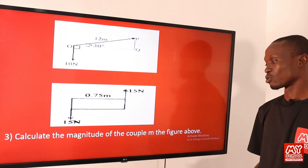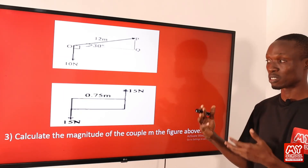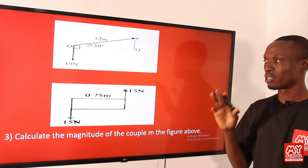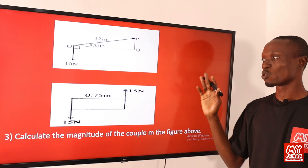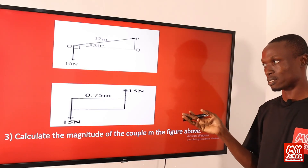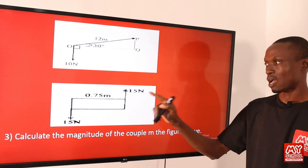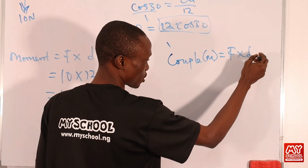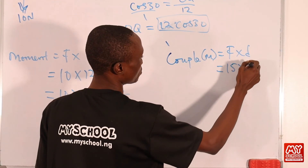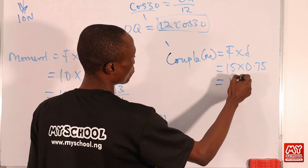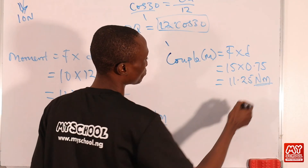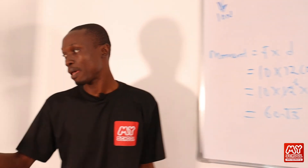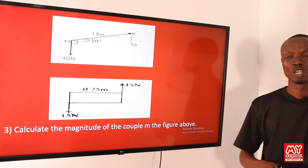Example three: Calculate the magnitude of the couple M in the figure. For a couple, it is still force times perpendicular distance, but we use one of the forces because a couple has two parallel, equal, and opposite forces. Here the perpendicular distance is 0.75 meters and the force is 15 newtons. So couple M = 15 × 0.75 = 11.25 newton-meters. Like moment, the unit of couple is also newton-meters.